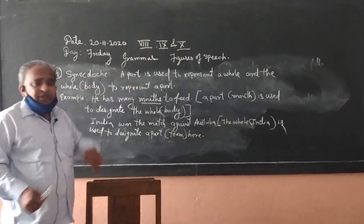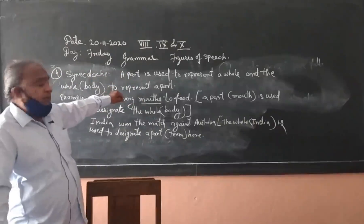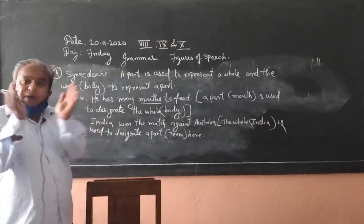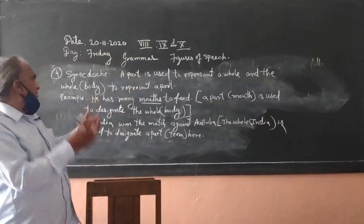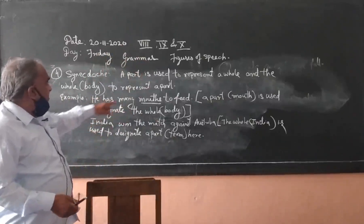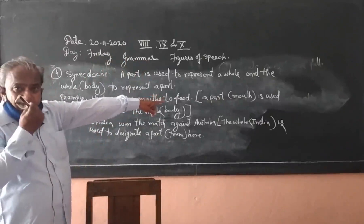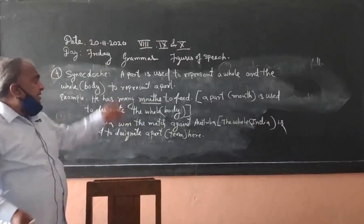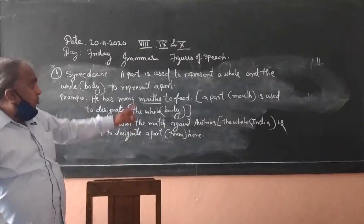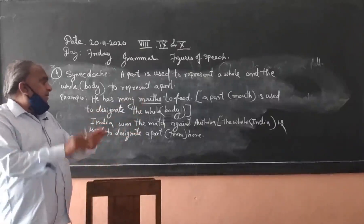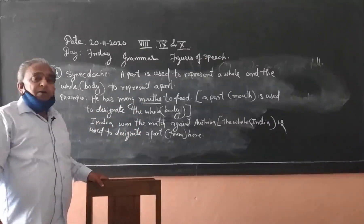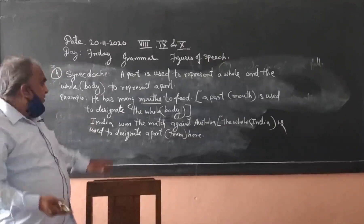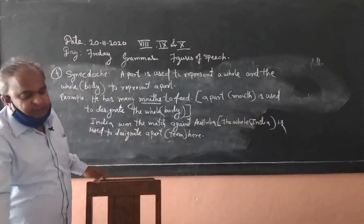For example, 'he has many mouths to feed' means he has many people in the house to feed them. Here, mouth — a part of the body — is used to show the whole family. Then, 'India won the match against Australia' means the whole India is used to designate a part — the team. Instead of saying our Indian team won against Australia, we say India won against Australia. This is synecdoche.